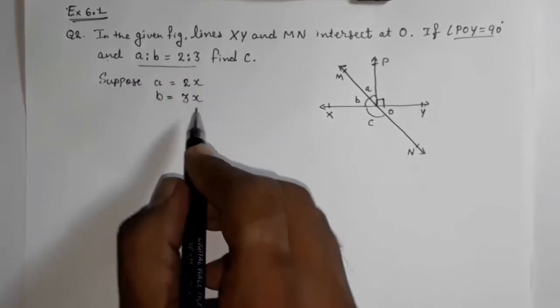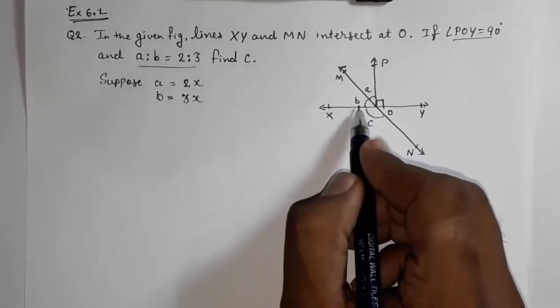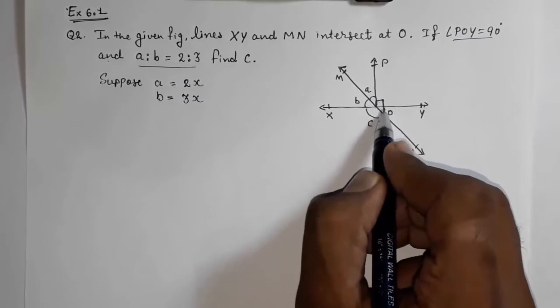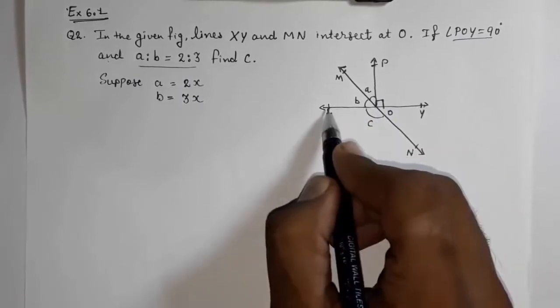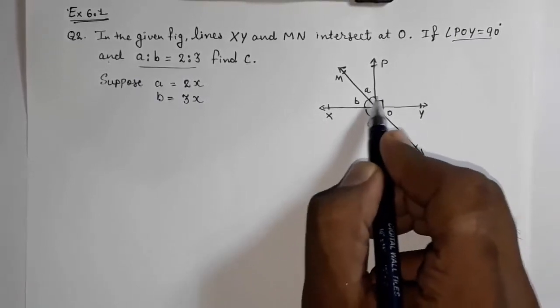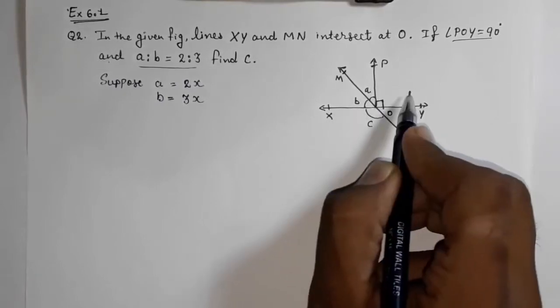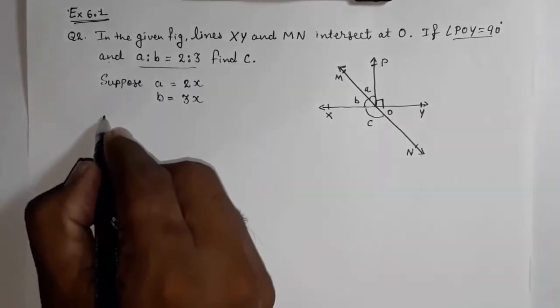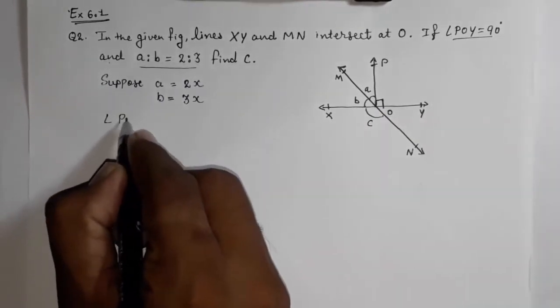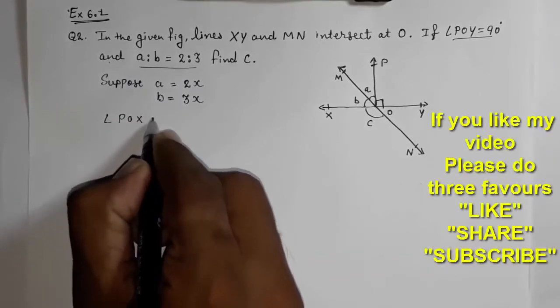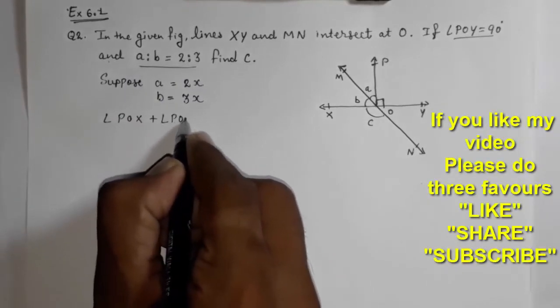Now you got this 2x and this 3x, and this is 90. So we know that XOY is a straight line, and so the sum of all this angle will be 180 by linear pair of angles.